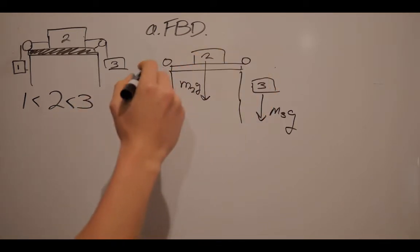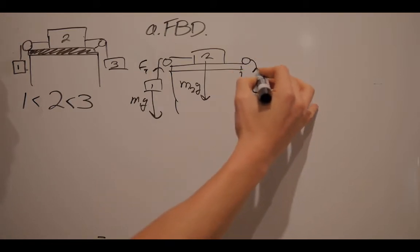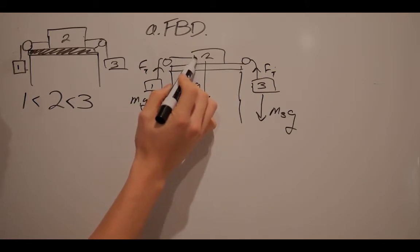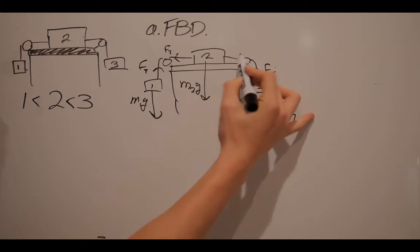Here are my pulleys. Now, mass 1 is attached to a string, so we have the force of tension. Mass 3 is attached to a string, so we have a force of tension. Mass 2 is being pulled by a string, so we have a force of tension on both sides.